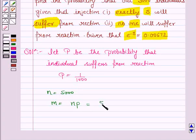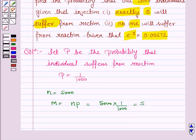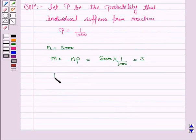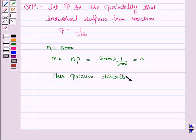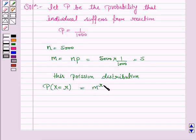Now N is 5000 and P is 1 upon 1000, so M equals 5. This is a Poisson distribution, given by: probability of X equal to R is M to the power R, into E to the power minus M, upon R factorial, where R goes from 0, 1, 2 to infinity.